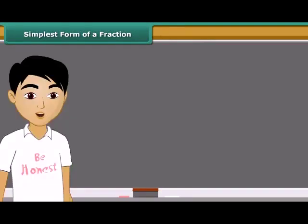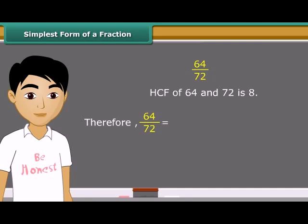Students, the second method to find the equivalent fraction in the simplest form is to find the HCF of the numerator and denominator and then divide both of them by the HCF. Consider fractions 64 upon 72. The HCF of 64 and 72 is 8. We get new fraction 8 upon 9 on dividing the numerator and denominator both by HCF.